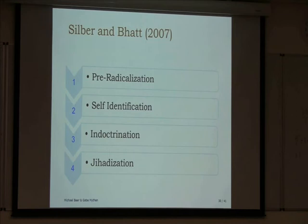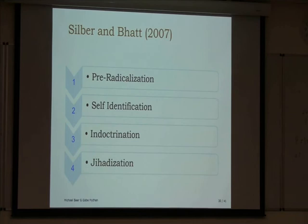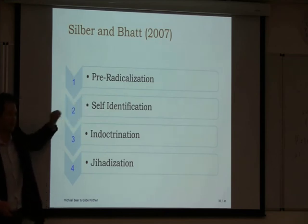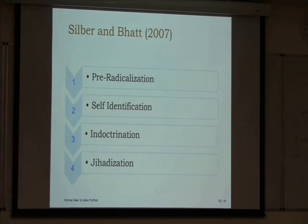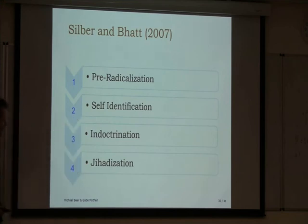The Silber and Bhatt model is based on an ideological cause. At the top you have a period where everything seems normal — pre-radicalization, with no exhibited pattern of strange behavior. Then people take on particular religious views, identify as radical, often engaging with Salafist interpretations. They engage with radical Islamist philosophy, become ideologically indoctrinated, commit to a particular position, and are then prepared for jihad — having accepted the need for politically or religiously-motivated violence in order to pursue changes.